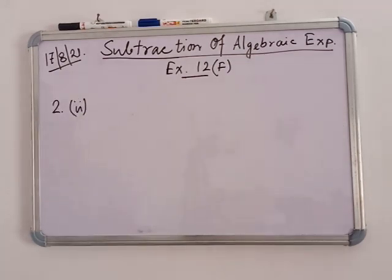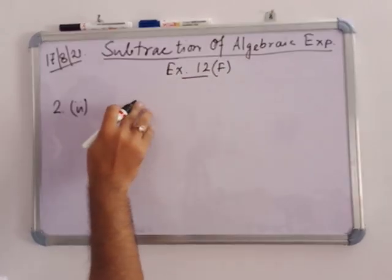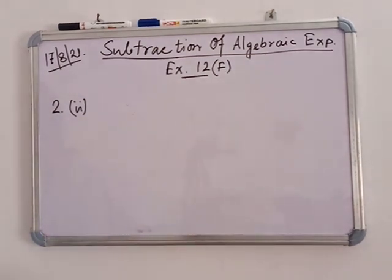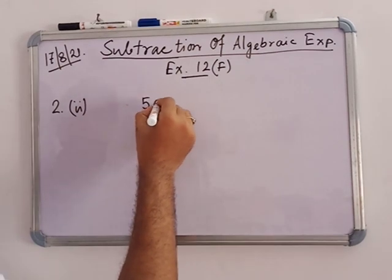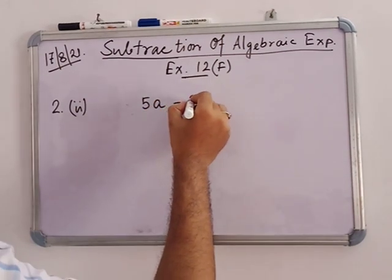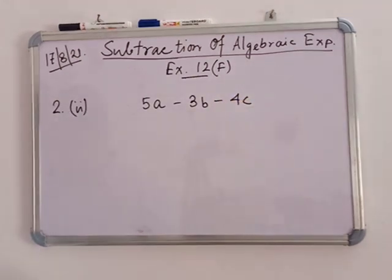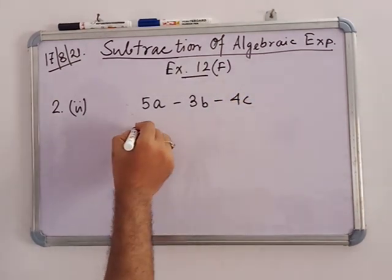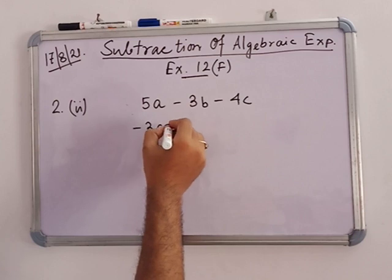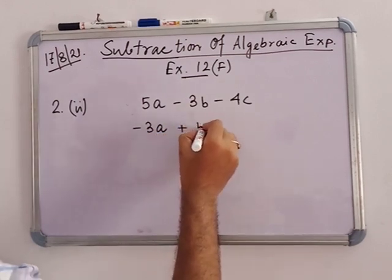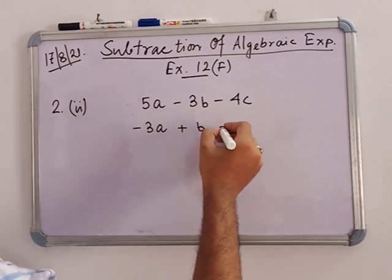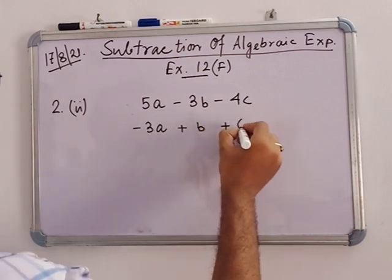Now in number 2a: subtract minus 3a plus b plus 6c from 5a minus 3b minus 4c. Using the column method, we first write 5a minus 3b minus 4c, then below it write minus 3a plus b plus 6c, and subtract.